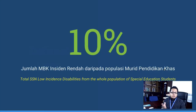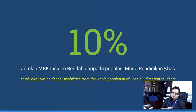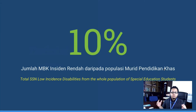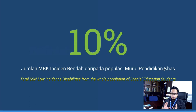For your information, the total number of students with special needs in terms of low incidence disabilities is just 10% from the whole population of students with special needs. So just 10% out of 100% of the population of students with special needs.